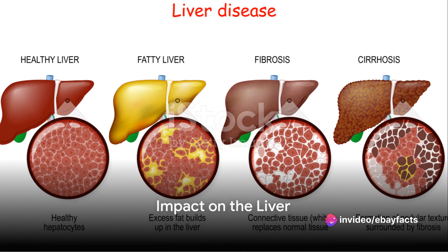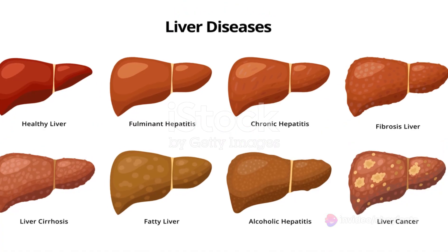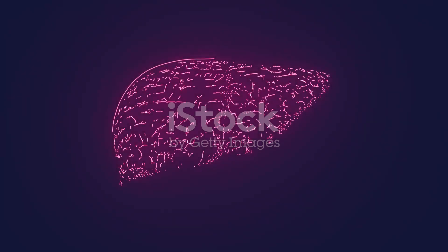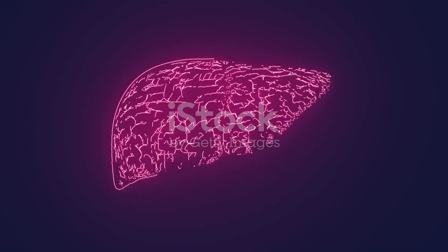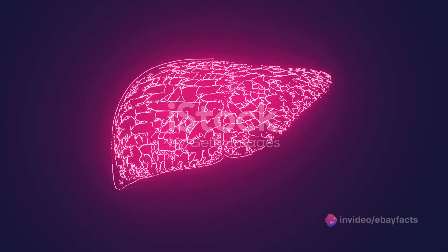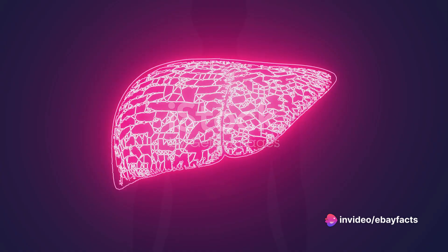Ketoacidosis affects the liver. The liver is involved in ketone production, but in ketoacidosis, the excessive production overwhelms the body's capacity to use or eliminate them effectively. This contributes to the accumulation of ketones in the blood.